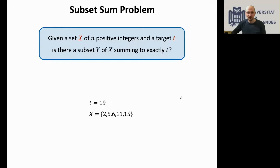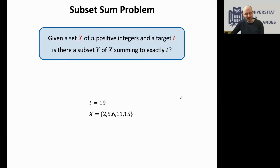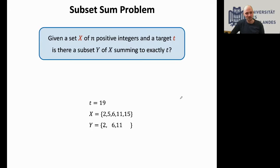Let's start with the most classic discrete optimization problem: the subset sum problem, where we are given a set X of n positive integers and a target number t, and we want to know whether some subset of X sums to t. For example, if our target is 19 and the set is {2, 5, 6, 11, 15}, then yes, there exists a subset that sums to 19. Subset sum is the most fundamental NP-hard problem at the intersection of theoretical computer science, optimization, and operations research.